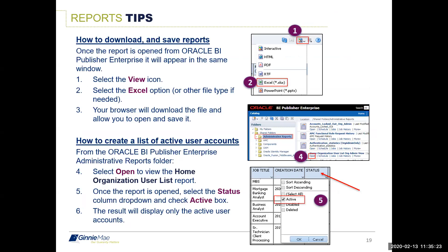For report tips: you can download and save reports in several formats — Excel is recommended because it allows sorting and filtering. Instructions on how to create a list of active user accounts are also available. For more detail on retrieving reports, refer to the AMC User Manual. If you're still unclear after reviewing the manual, don't hesitate to reach out to Ginnie Mae customer support and they'll walk you through resolving the issue.